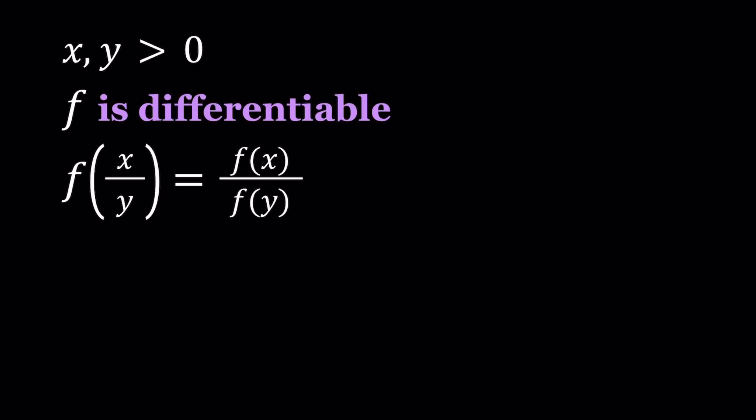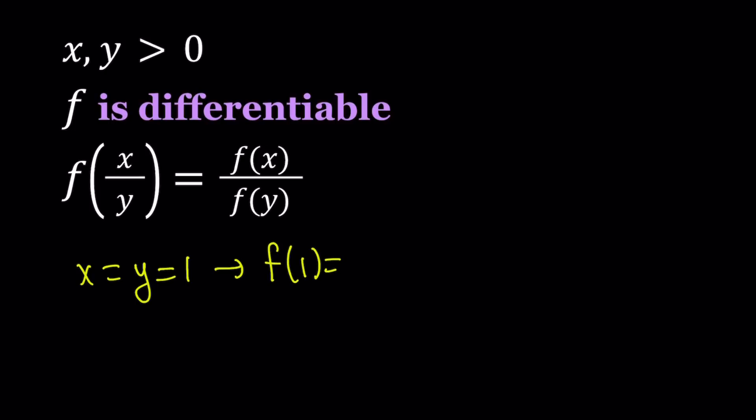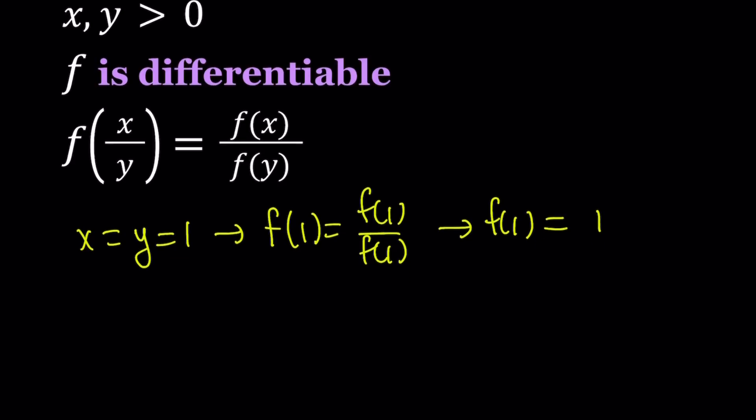I'm going to replace x and y both with 1. From here we get f of 1 equals f of 1 over f of 1. Obviously, f of 1 in this case cannot be 0, and if it's not 0, then this gives us f of 1 equals 1.